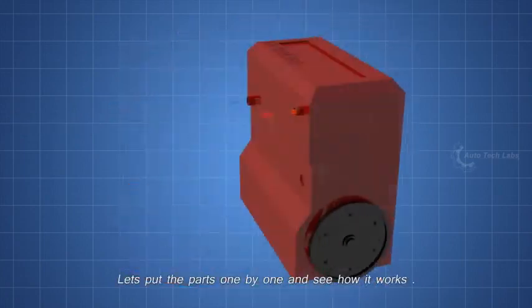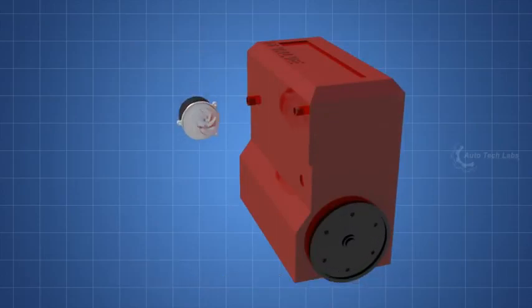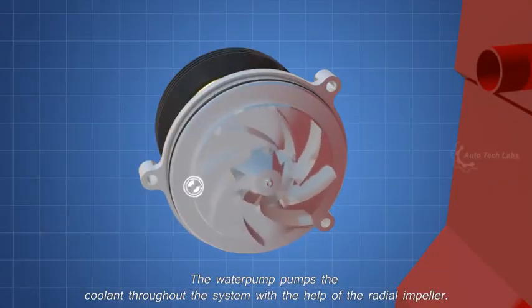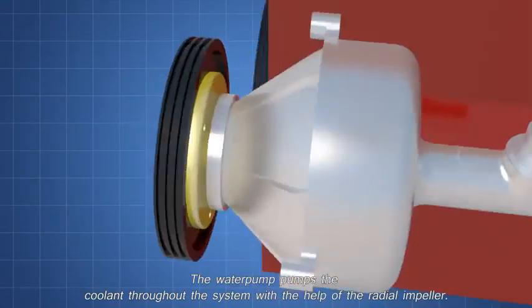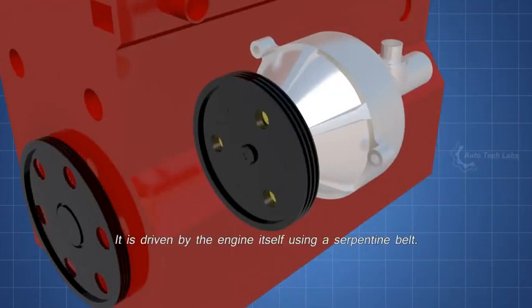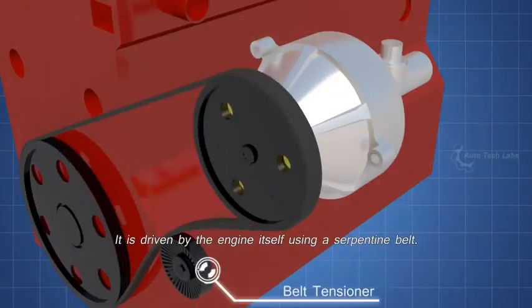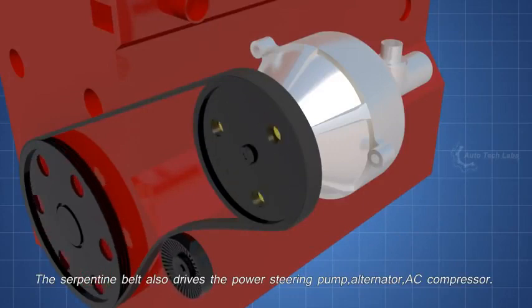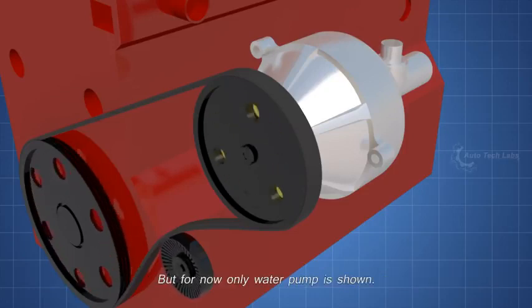Let's put the parts one by one and see how it works. The water pump pumps the coolant throughout the system with the help of the radial impeller. It is driven by the engine itself using a serpentine belt. The serpentine belt also drives the power steering pump, alternator, AC compressor. But for now only water pump is shown.